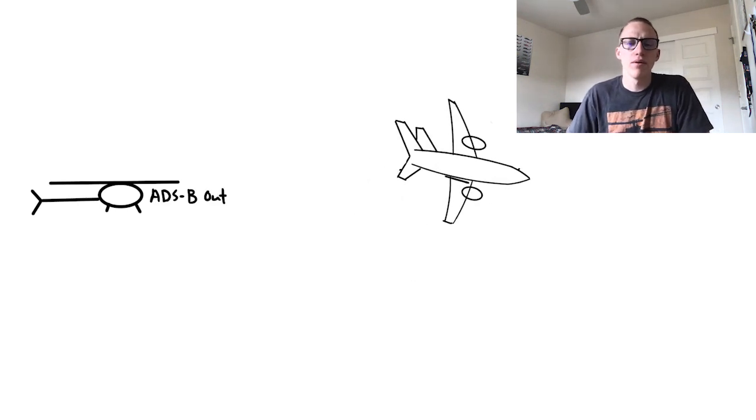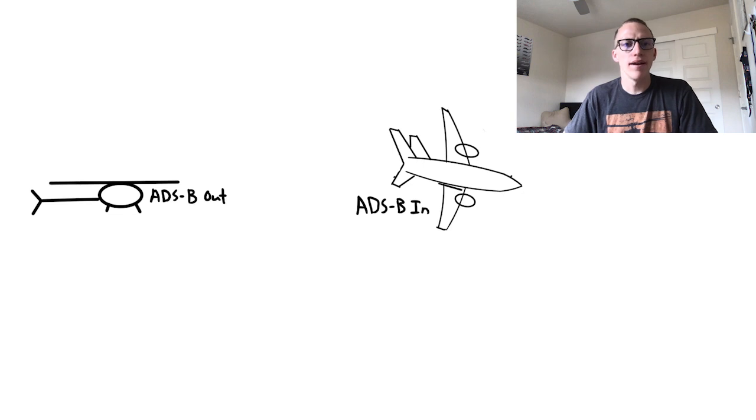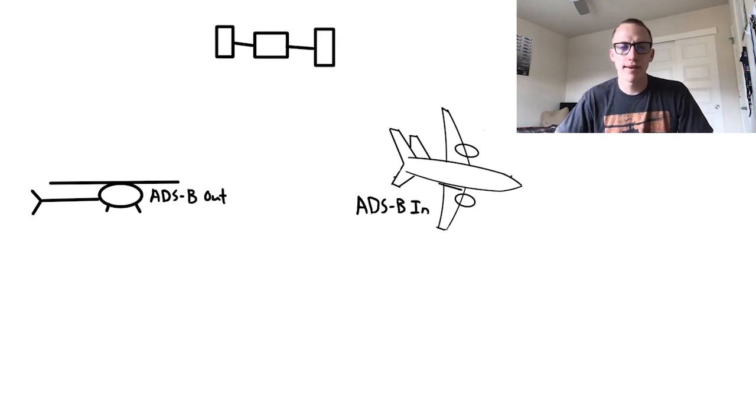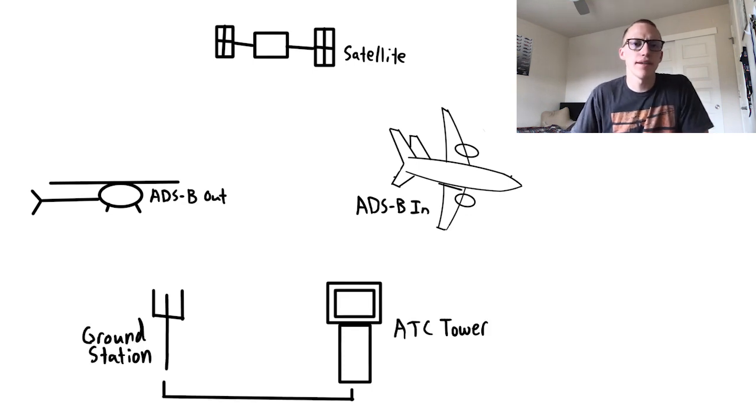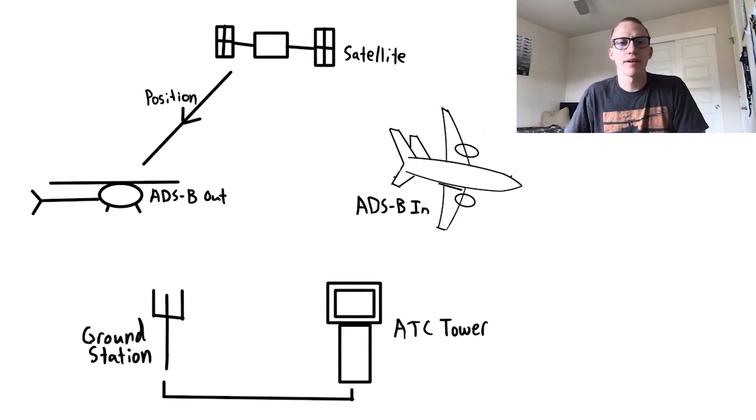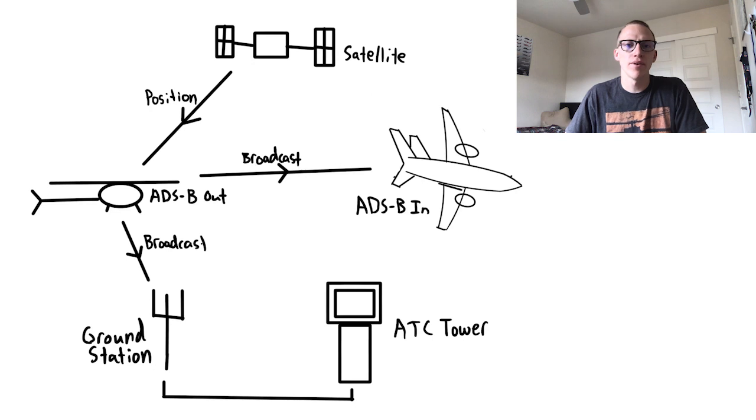Let's take a look at an example system using ADS-B. We'll have a helicopter with only ADS-B out, an airplane with only ADS-B in, a satellite, an ATC tower, and an ATC ground station. The D in ADS-B was dependent, and the helicopter with ADS-B will depend on our satellite for position information. The B in ADS-B was broadcast, and the helicopter will broadcast its position from both air-to-air and air-to-ground. The ATC ground station receives the air-to-ground signal, which is relayed to the ATC tower. The controller can now see the aircraft's position.